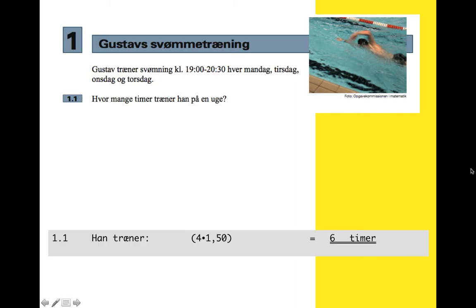So it's four times 1.5, because it's four days at one and a half hours each, and that makes six hours. You might want to show where you got 1.5 from — clearly it's from 1900 to 2030, which is 1.5 hours. You might want to write that as 20.5 minus 19 gives you the one and a half hours, times the four makes the six.